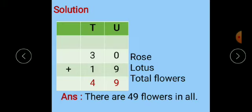For that, the solution is: first number is 30, what is 30? 30 rose flowers. Plus second number is 19, what is 19? Lotus flowers.